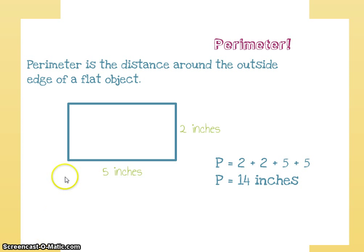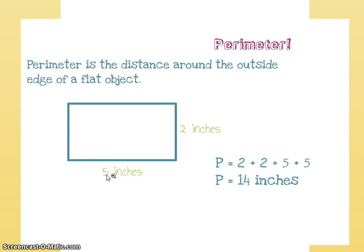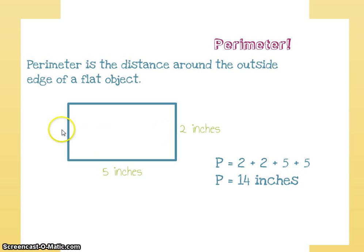So for example, here we have a rectangle. This rectangle is five inches long along this side and two inches wide over here. So we have the length and the width. And we're going to assume, since it's a rectangle, that this side right here is going to be two inches, and this side up here will be five inches.